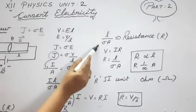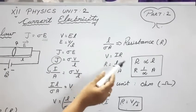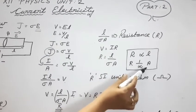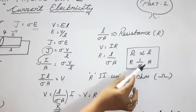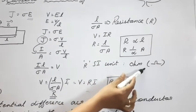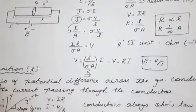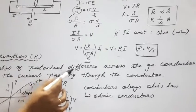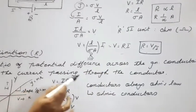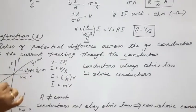The resistance R is directly proportional to the length of the conductor and inversely proportional to the area of the conductor. The SI unit of resistance is the ohm (Ω). Resistance is defined as the ratio of potential difference across a given conductor to the current passing through the conductor.